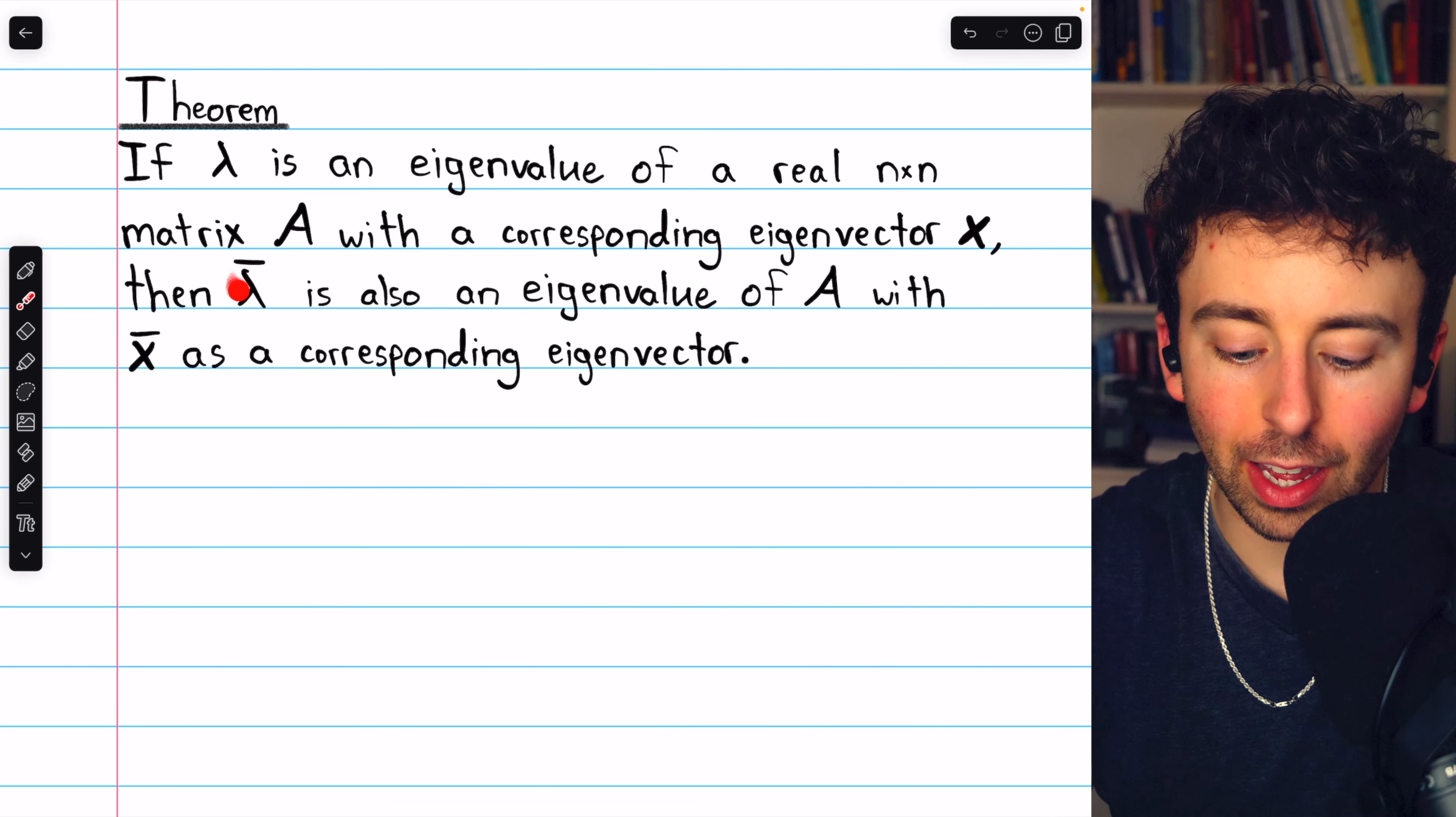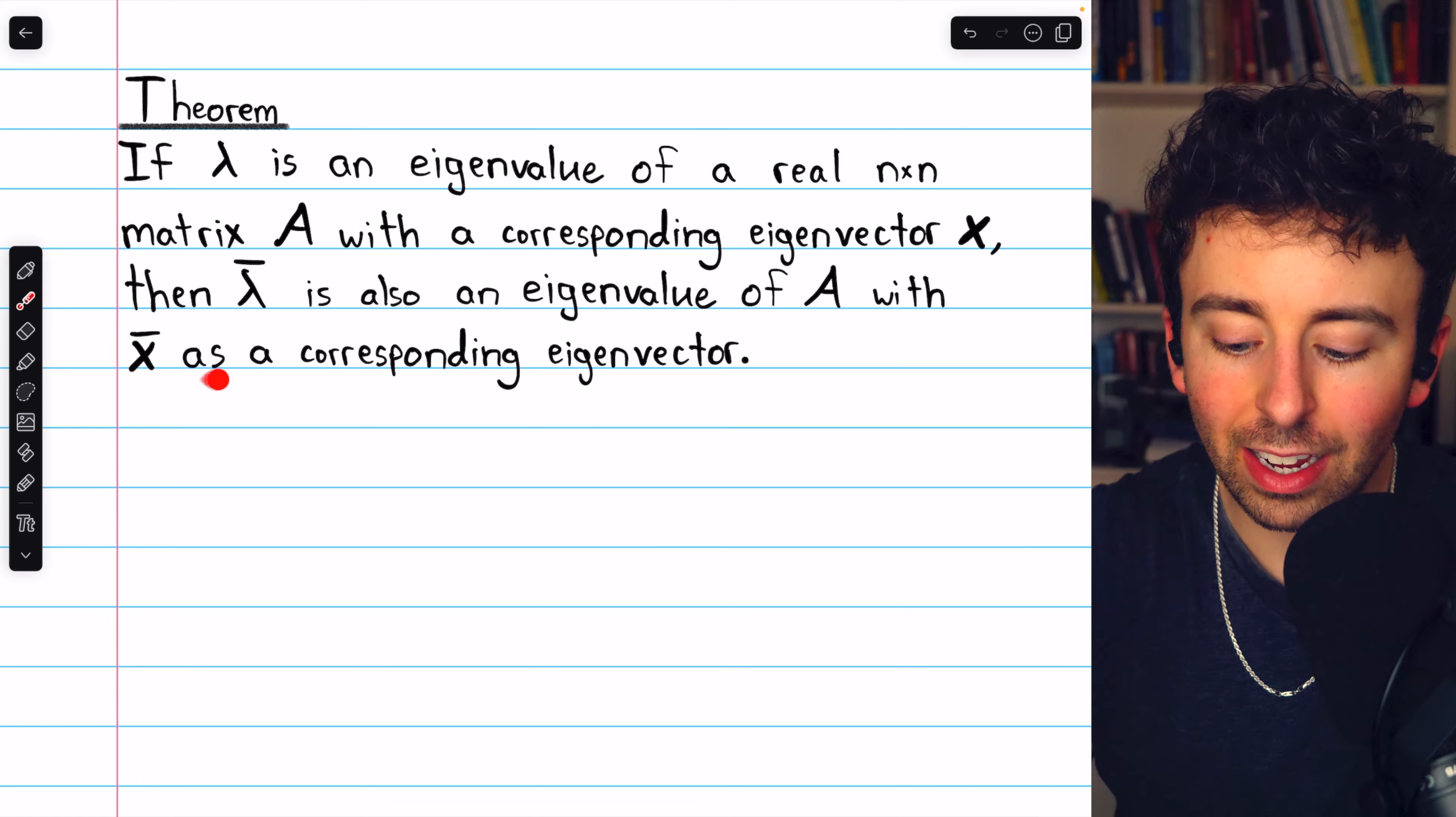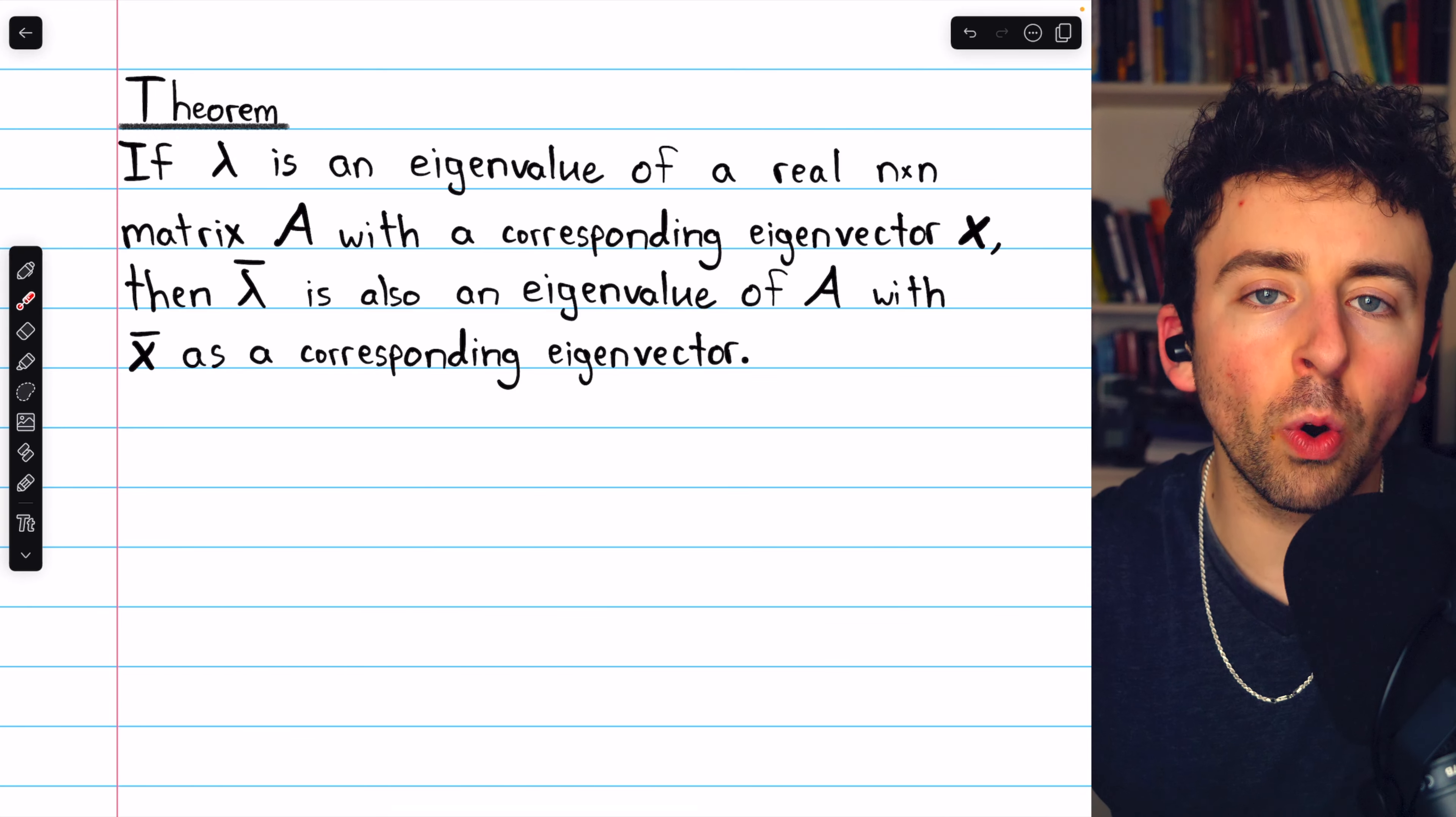then the conjugate of that eigenvalue lambda is also an eigenvalue of A, and the conjugate of that eigenvector is a corresponding eigenvector.